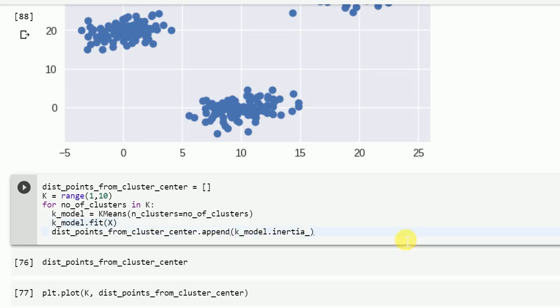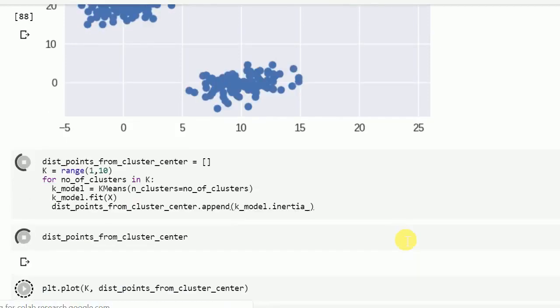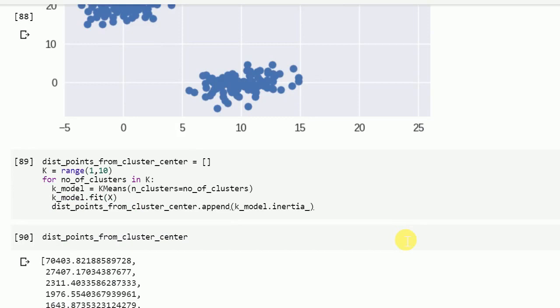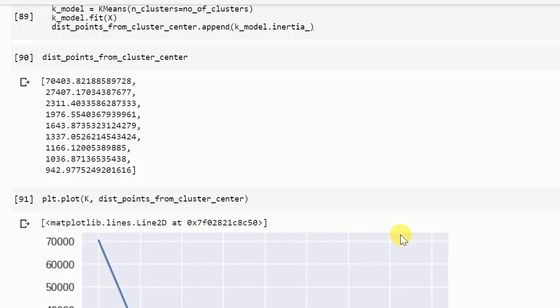So in this piece of code I create k in range of 1 to 10. At every cluster point, I basically find out the optimum distances of each point with respect to the cluster centroid and I store it into a list called dist_points_from_cluster_center. This is the list which is generated and this is a plot.